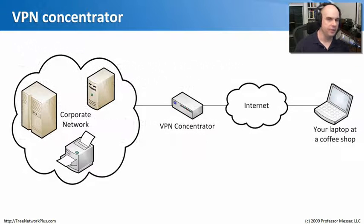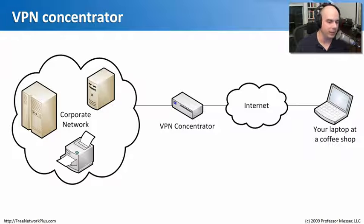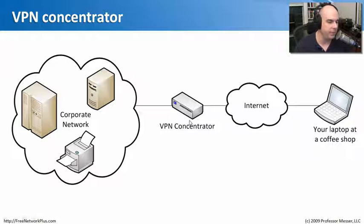Another important security device is the VPN concentrator. Say you're out at Starbucks with your laptop and don't have direct access to your network — after all, there's a firewall preventing outside access. A VPN concentrator allows you to set up an encrypted tunnel, a private tunnel between your laptop and the VPN concentrator, which receives the encrypted data, decrypts it, and essentially drops you off on the inside network.